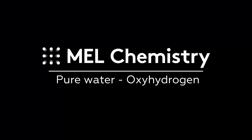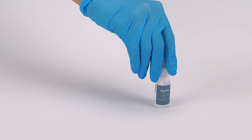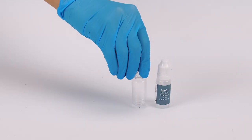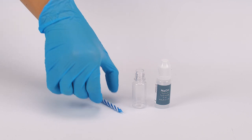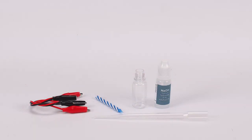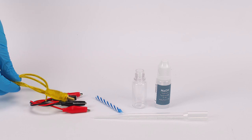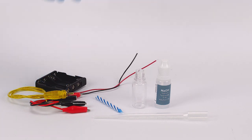For the oxyhydrogen experiment, you will need a solution of sodium hydroxide. Take an empty reagent bottle, a candle, a filter body, two wires with crocodile clips, a cable plug, and the battery holder from the experiment set.